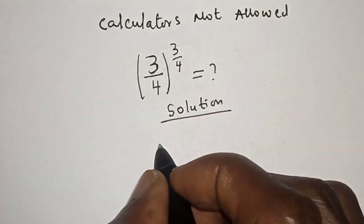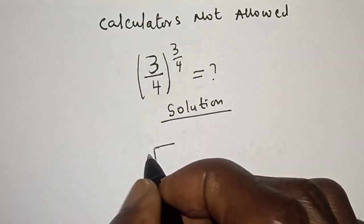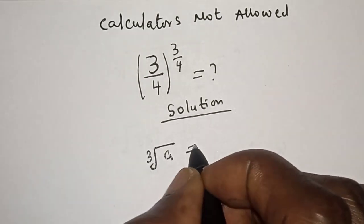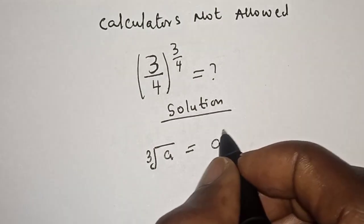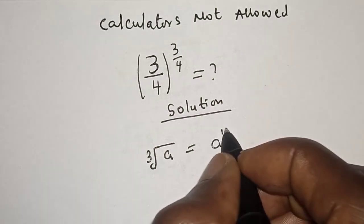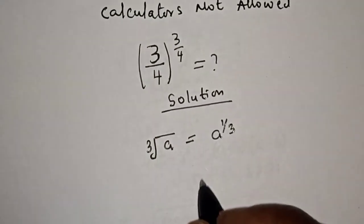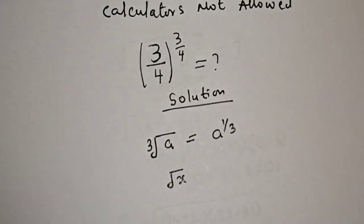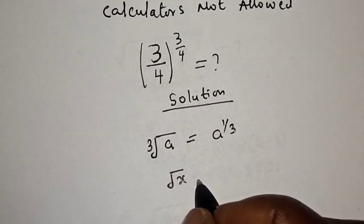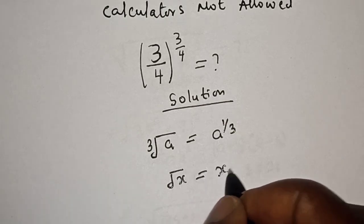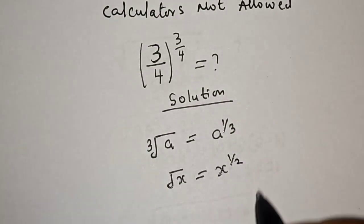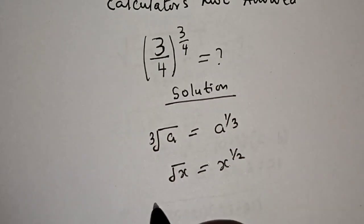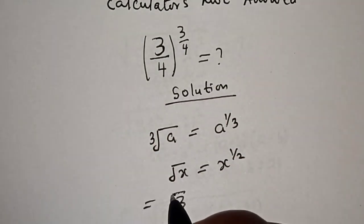Take note that if you have the k-th root of a, this is equal to a raised to the power 1 over k. Also, if you have the square root of x, this is equal to x raised to the power 1 over 2. Therefore, this expression can be written as the 4th root of...